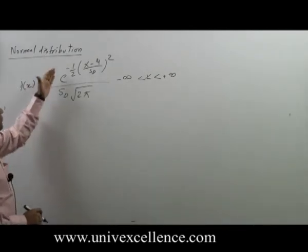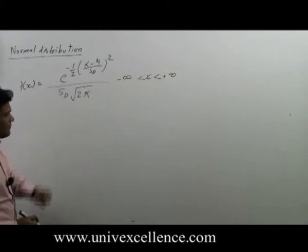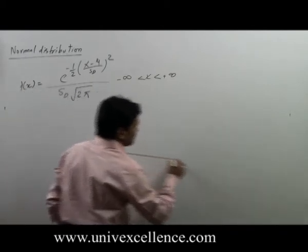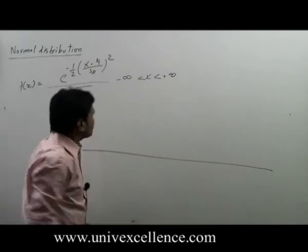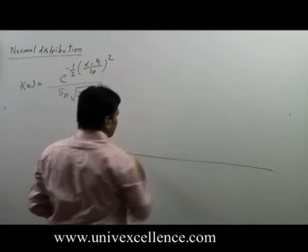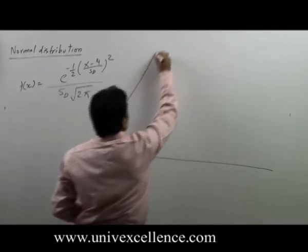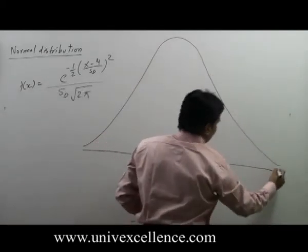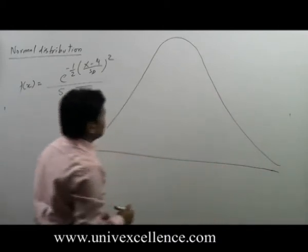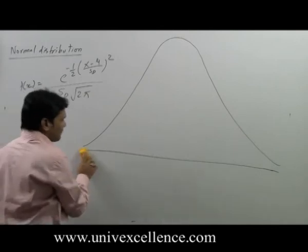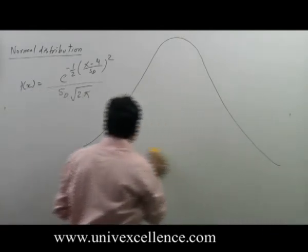When they draw the graph of this function, they always get a graph like this. The shape of the graph is always like this—a bell-shaped curve. We can say the graph is a bell-shaped curve.